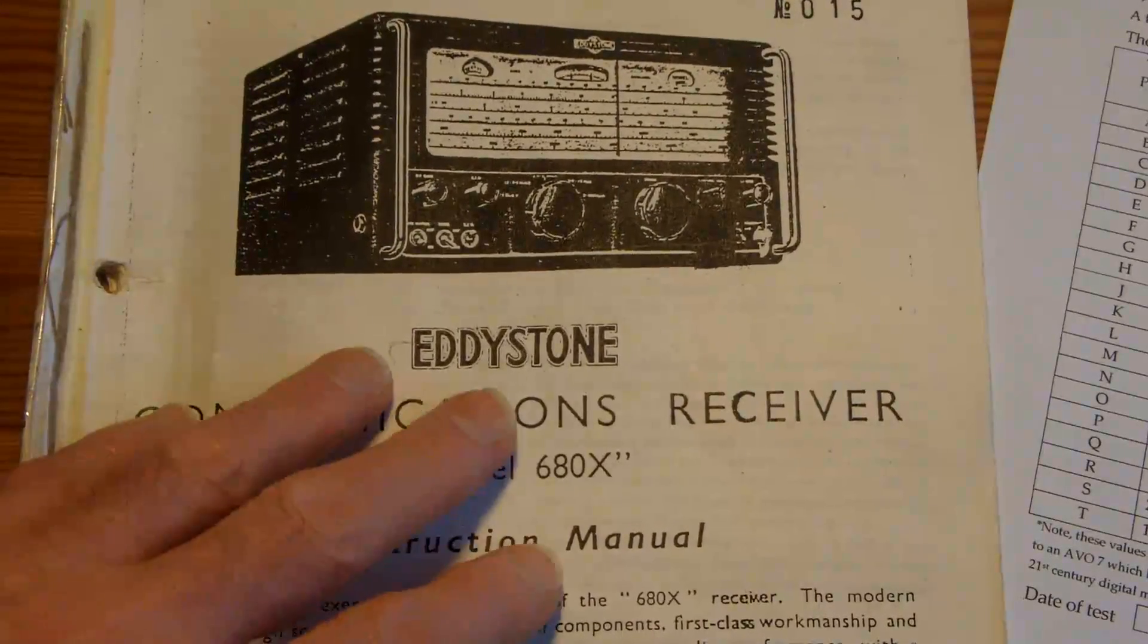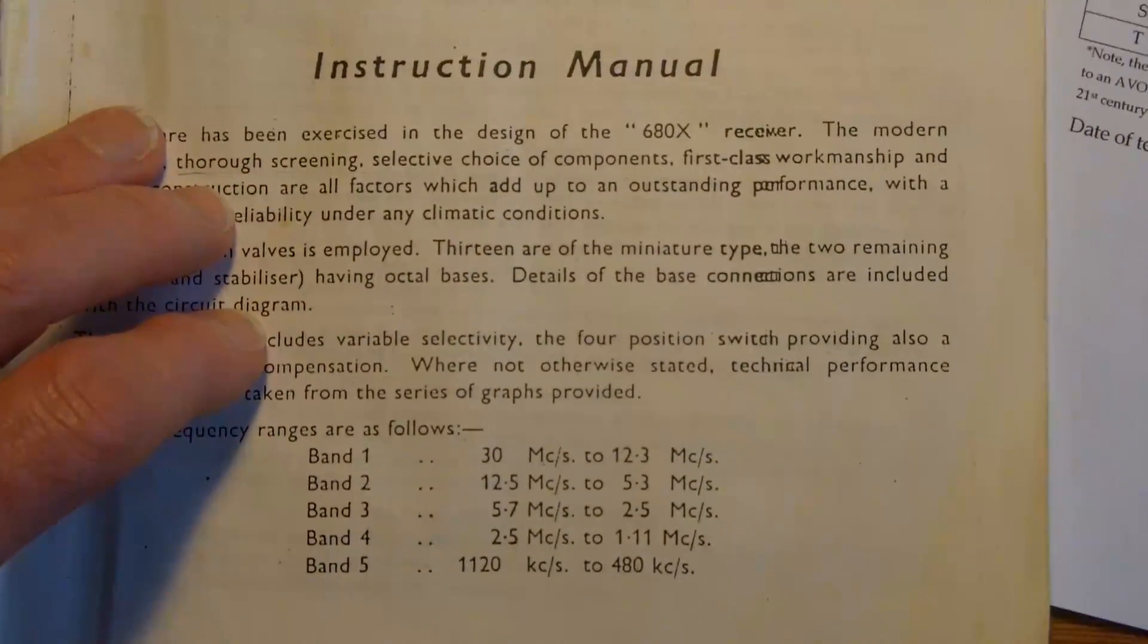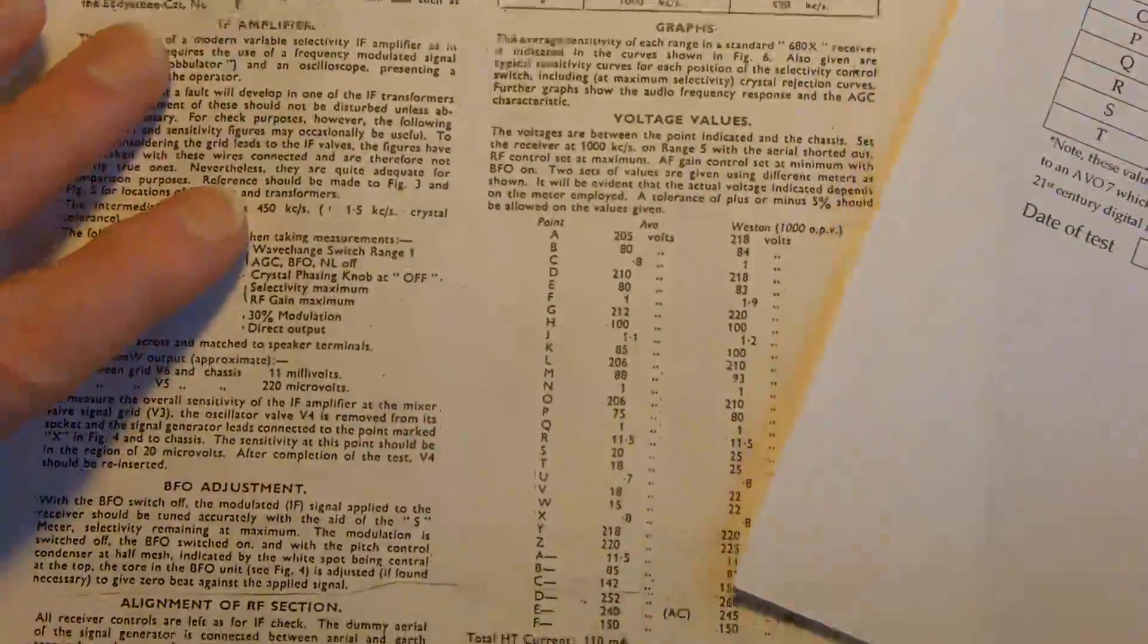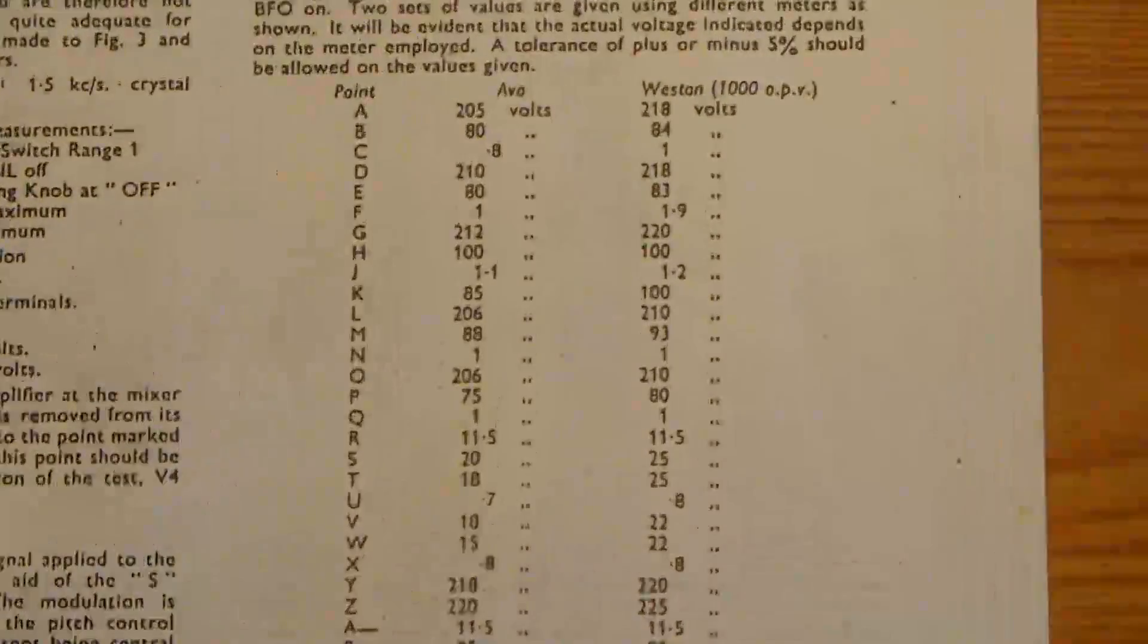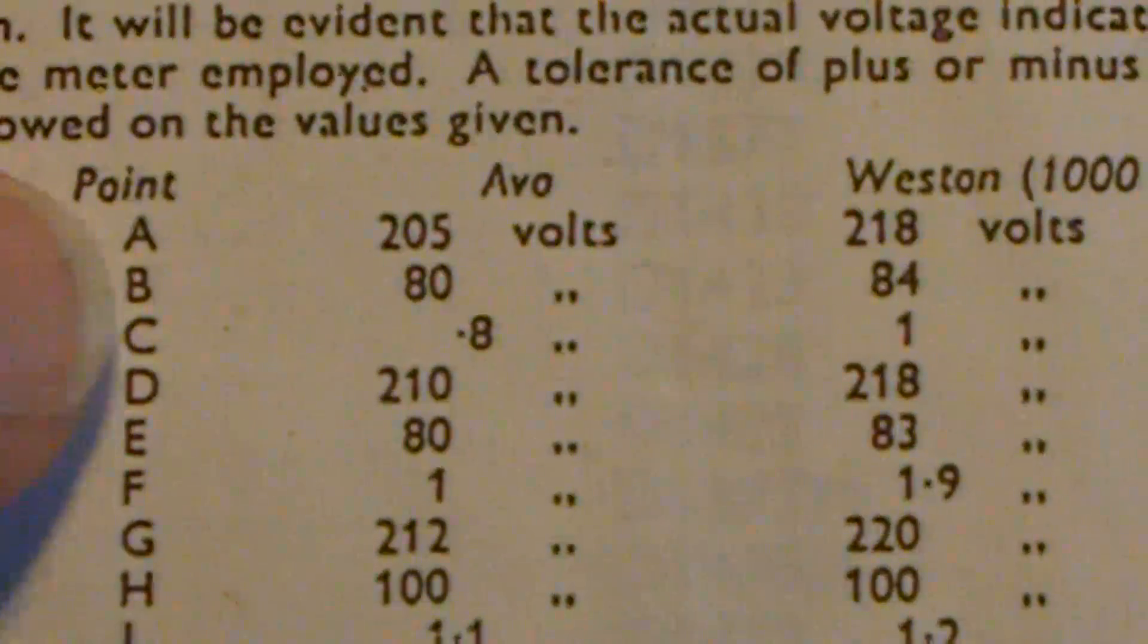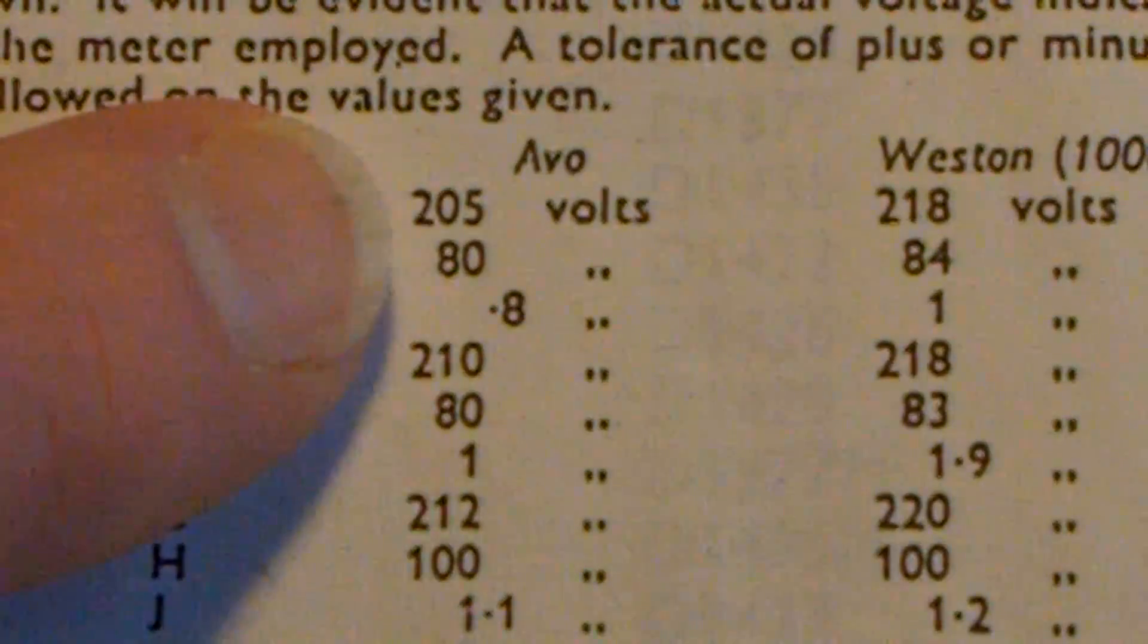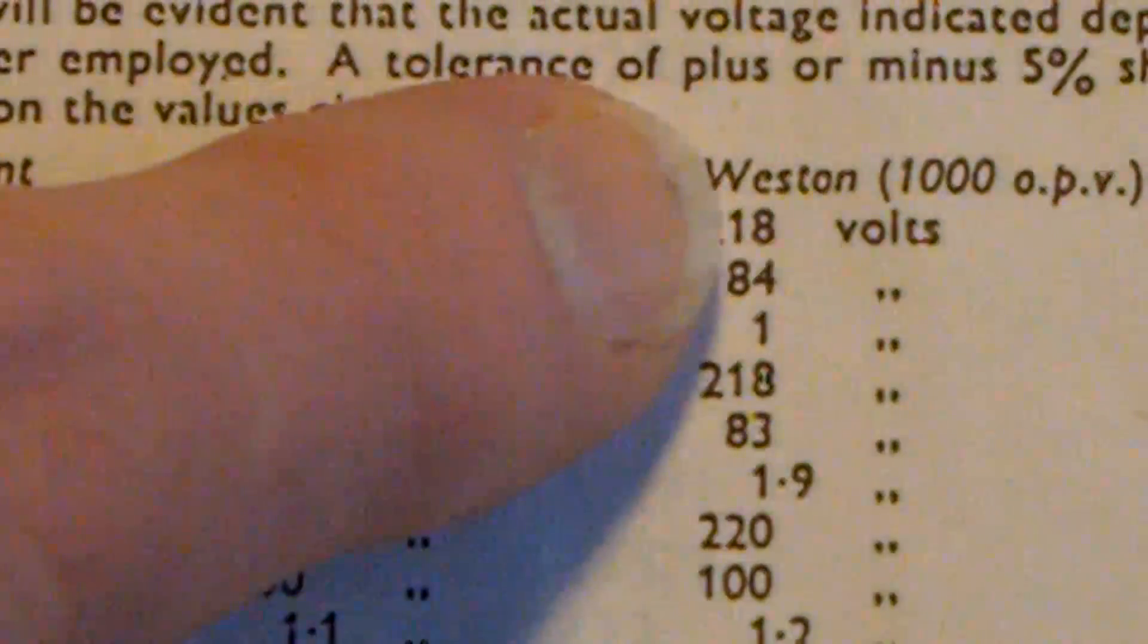So this is the manual that I got with the radio. And it's got a lot of useful stuff in it. Here is a list of voltages for various parts of the circuit. So these positions listed down here: A, B, C, etc. And then there's two sets of voltages. And it's marked for an AVO and for a Weston.